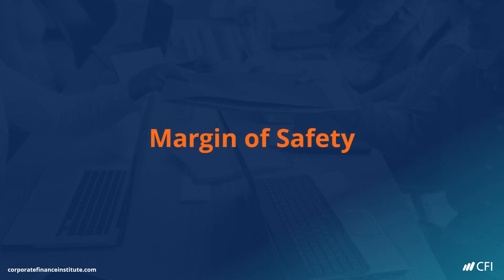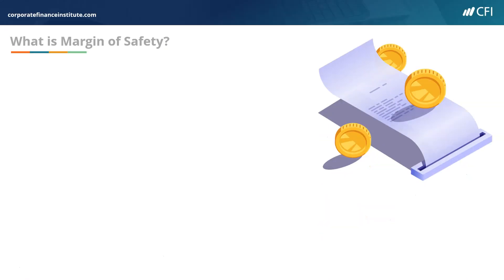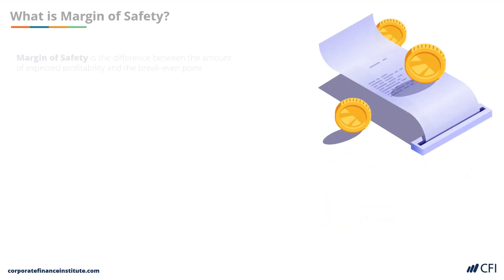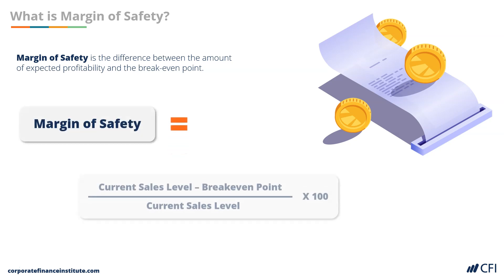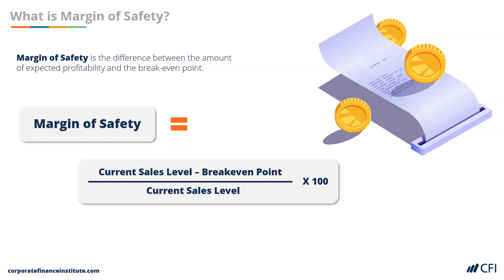The margin of safety is the difference between the amount of expected profitability and the breakeven point.